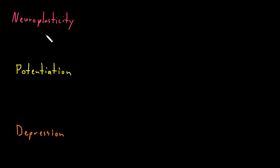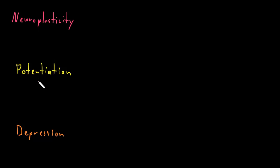The amount of neuroplasticity is highest during development of the nervous system and lower afterward, but it's still present throughout life and it transiently increases following nervous system injury. Parts of neurons and chains of neurons that are used often grow stronger, meaning that each action potential will have a larger effect on the target cell, which we call potentiation. Parts of neurons and chains of neurons that are used rarely grow weaker, which we call depression.